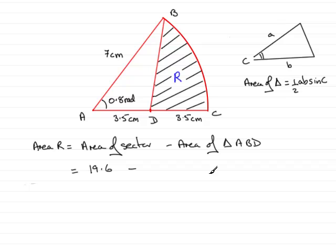So I'm going to use that here for the area of triangle ABD. So it's going to be half of the product of the two sides times the sine of the included angle. So that would be half times 7 times 3.5 times the sine of the included angle 0.8, and remember it's radians. So again in this question we're doing the sine of an angle in radians, so you need to be in radians mode on your calculator to do this.